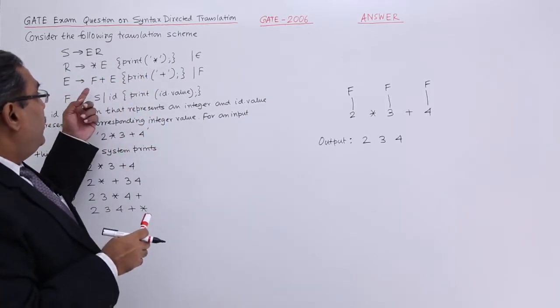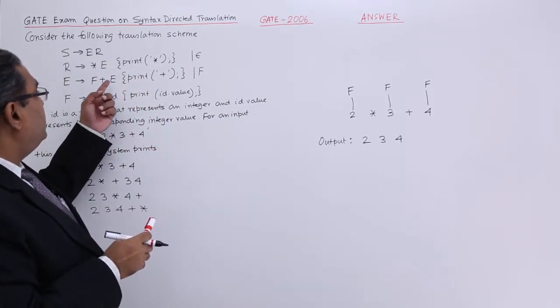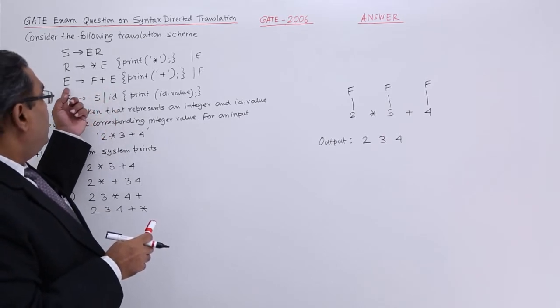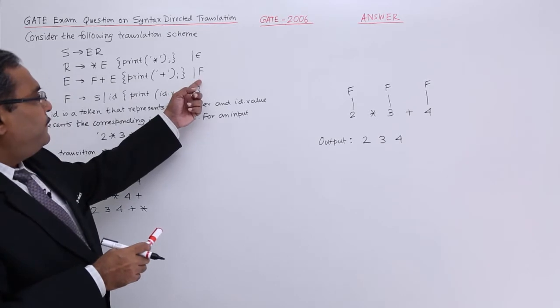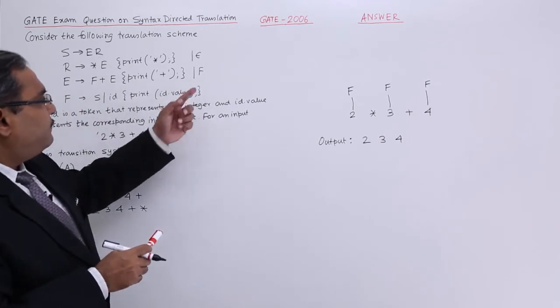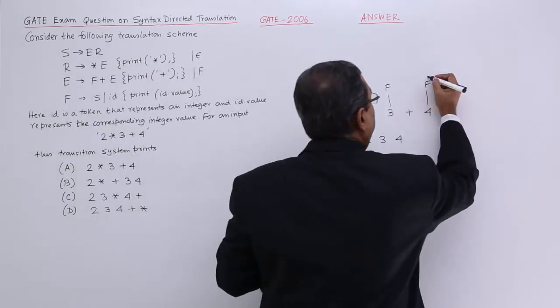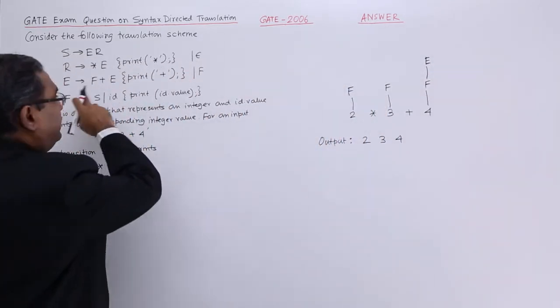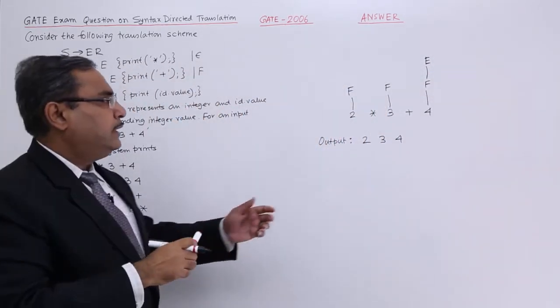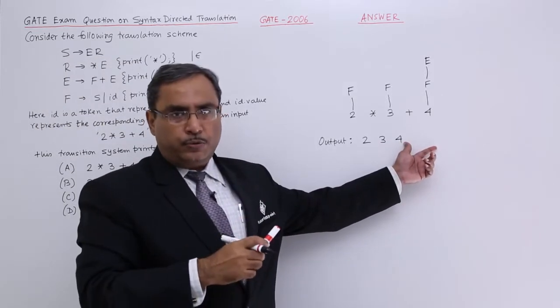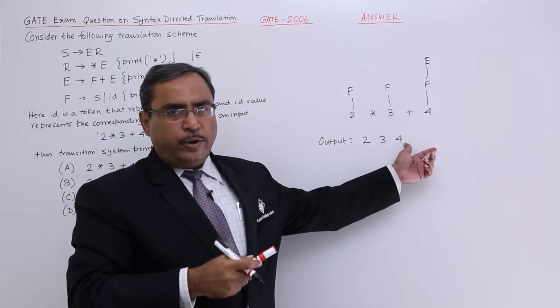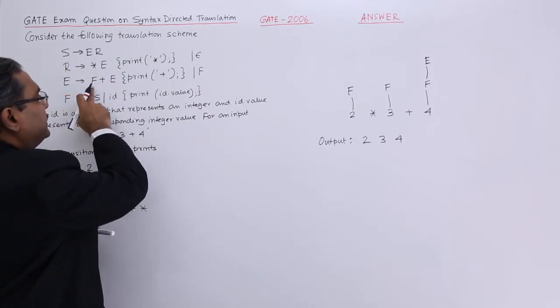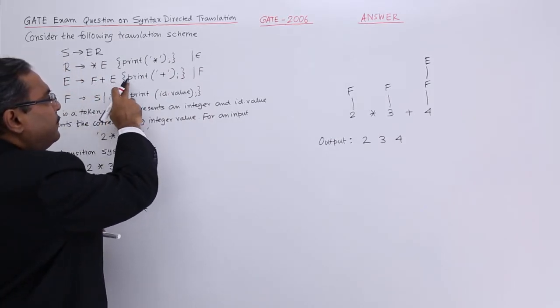Now, we are having these production rules. E produces F, that is one thing. If I replace this one by E, you see E produces F does not have any semantic action. Nothing is going to be printed on the output or no semantic action is going to take place. Now, E produces F plus E print plus.